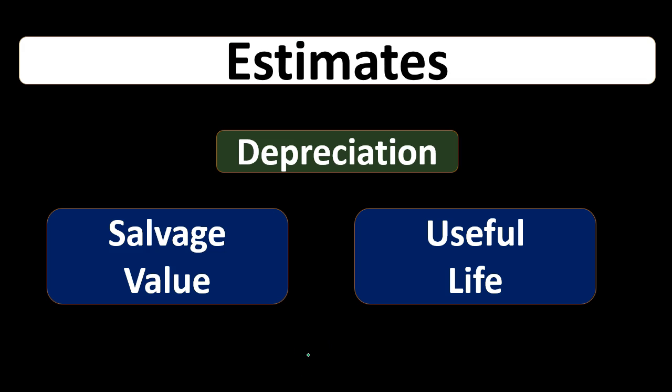Depreciation is the allocation of the cost of property, plant and equipment over the useful life. When we purchase equipment, even if we paid cash for it, we put it on the books as an asset rather than expensing it at the time of purchase. Then we allocate the cost over the life of that asset in accordance with the matching principle, trying to match up the expense with the related period in which it helps to generate revenue. As we consume the property, plant and equipment, we write off the expense when it has been consumed to help generate revenue, giving us the best matching and comparability.